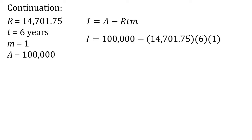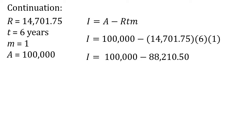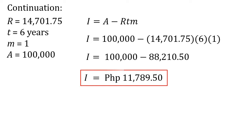To solve for the interest, we use the formula: I equals A minus R times t times m. Substituting the values: I equals 100,000 minus 14,701.75 times 6 times 1, which gives I equals 100,000 minus 88,210.50. Solving for the difference, the amount of interest is 11,789.50 pesos.